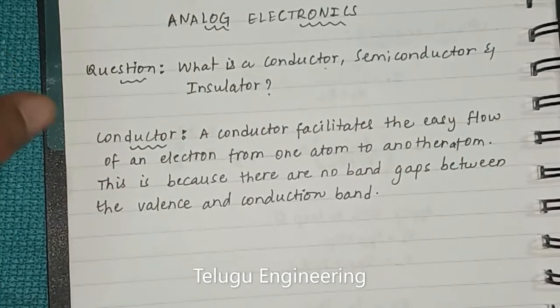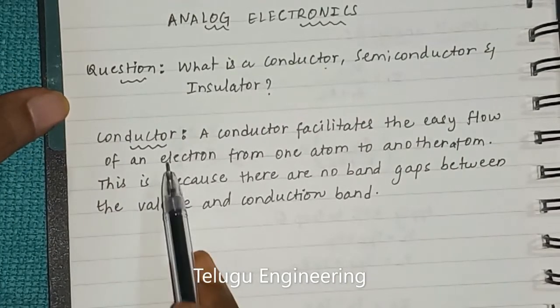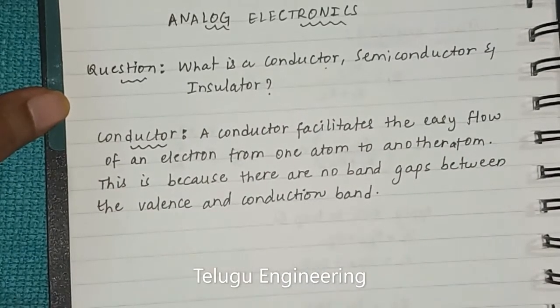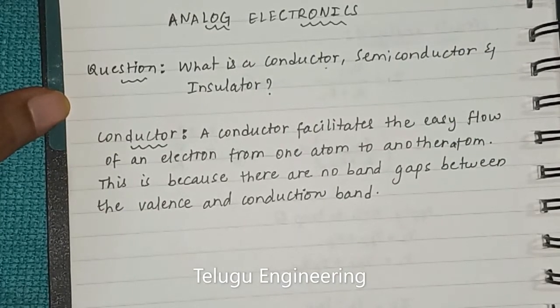Coming to the definition of a conductor: A conductor facilitates the easy flow of an electron from one atom to another atom when proper application of voltage. This is because there are no band gaps between the valence and conduction bands.